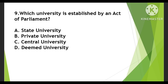Next question: Which university is established by the Act of Parliament? Options are State University, Private University, Central University, or Deemed University. The right answer is Central University. Central Universities are established by an Act of Parliament.